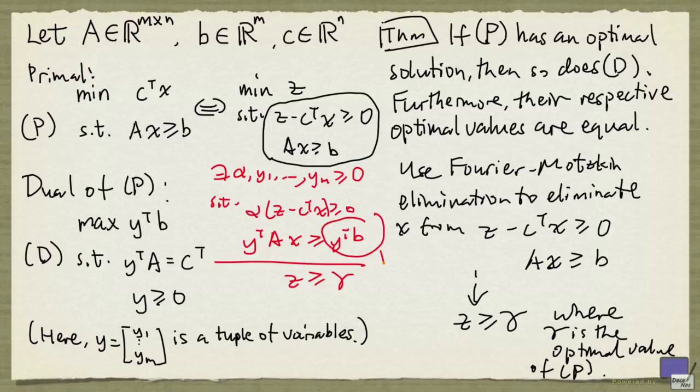Now that means, y transpose b is equal to gamma. And on the left-hand side, there's no z here, so alpha must be 1. And if alpha is 1, then minus c transpose plus y transpose a must be 0. So y transpose a has to be c transpose.